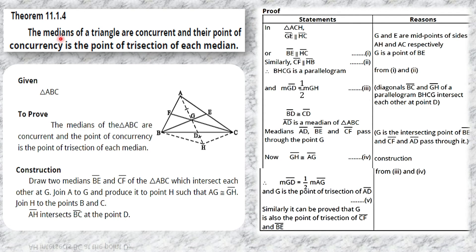We have proved that medians AD, BE and CF pass through point G, and that G is the point of trisection of median AD. Similarly, it can be proved that G is also the point of trisection of medians CF and BE. Hence the medians of a triangle are concurrent and their point of concurrency is the point of trisection of each median.